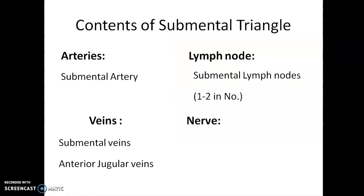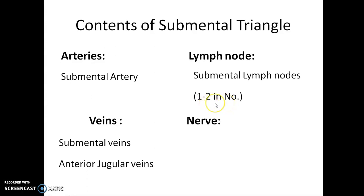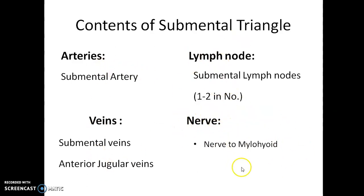The contents of the submental triangle are quite straightforward. There is the submental artery, which is a branch of the facial artery, and the submental vein, which drains into the facial vein. The submental veins of both sides join and travel downwards in the neck as the anterior jugular veins — so there are two submental veins and two anterior jugular veins. The lymph nodes here are the submental lymph nodes, one or two in number, draining the tip of the tongue, the lower four incisors and their gums, and the median portion of the lower lip. The nerve present is not called the submental nerve — importantly, it is the nerve to the mylohyoid muscle. This is the most important content to remember about the submental triangle.